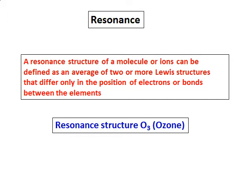A resonance structure of a molecule or ions can be defined as an average of two or more Lewis structures that differ only in the position of electrons or bonds between the elements.